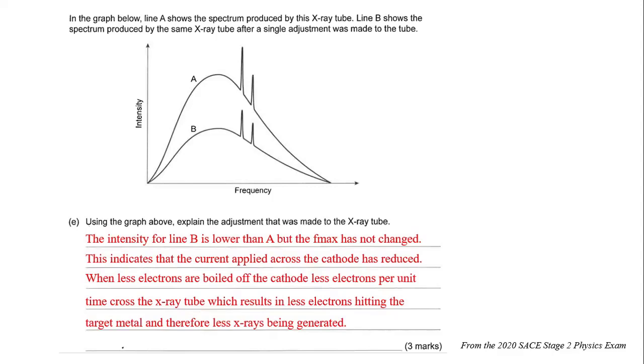More often than not, A would be down the bottom and B would be up the top and you'd have to say they've increased the current, but in this case they've done it the other way around.